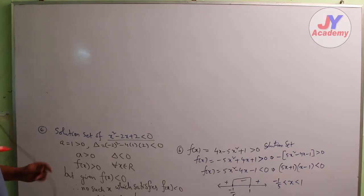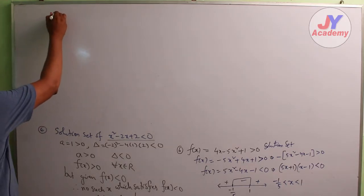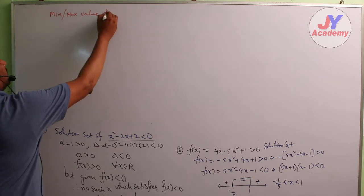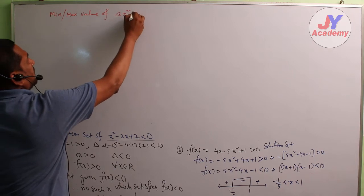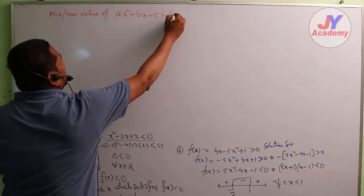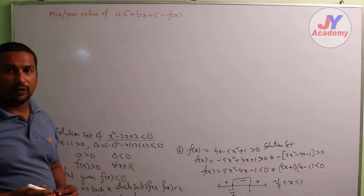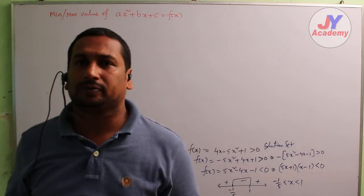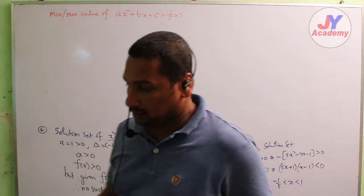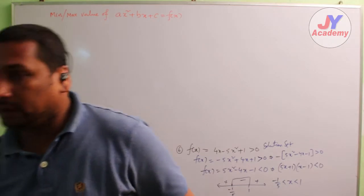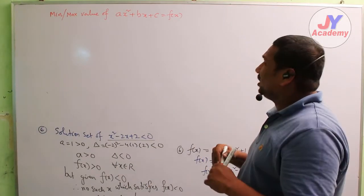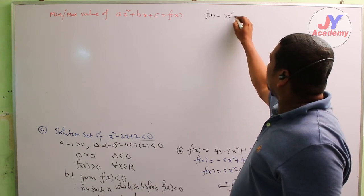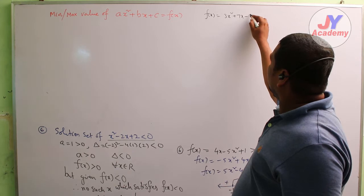We will see the minimum value and maximum value of ax² + bx + c, that is f(x). Now we have to find the minimum and maximum value of f(x). So better to do with an example. Suppose f(x) is equal to 3x² + 7x minus 4.